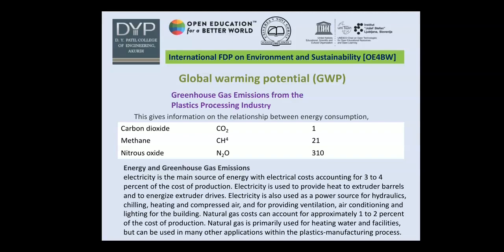Electricity is the main source of energy, with electrical costs accounting for three to four percent of the cost of production. Electricity provides heat to the extruder, energizes extruder drives, and powers hydraulics, chilling, heating, compressed air, ventilation, air conditioning, and lighting. Natural gas accounts for approximately one to two percent of production costs and is primarily used for heating water and facilities.